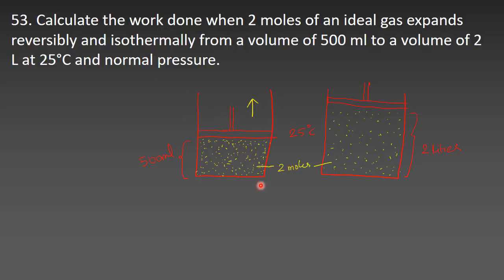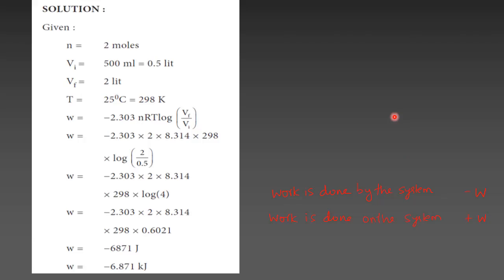Let's imagine there is a container. We have 2 moles of gas — we have to expand the piston from 500 ml. The formula for work done is: W equals minus 2.303 nRT log of Vf divided by Vi — that is final volume divided by initial volume.